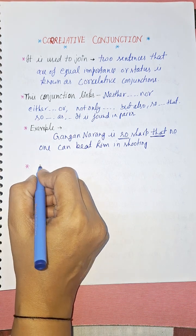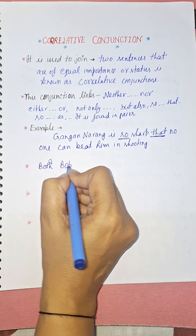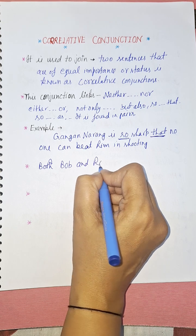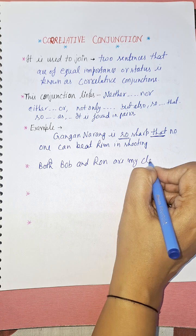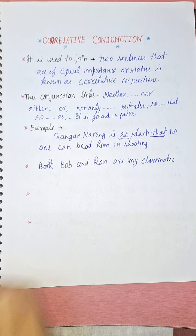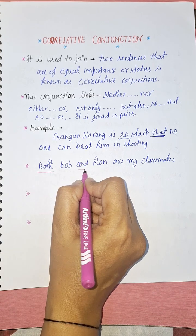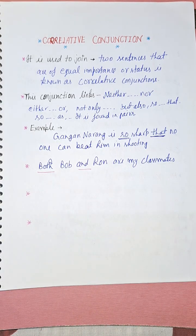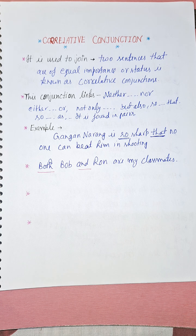One more example using 'both...and': Both Bob and Ron are my classmates. Here the pair is 'both' and 'and'. Both Bob and Ron are my classmates — this is your correlative conjunction, which is always found in a pair.